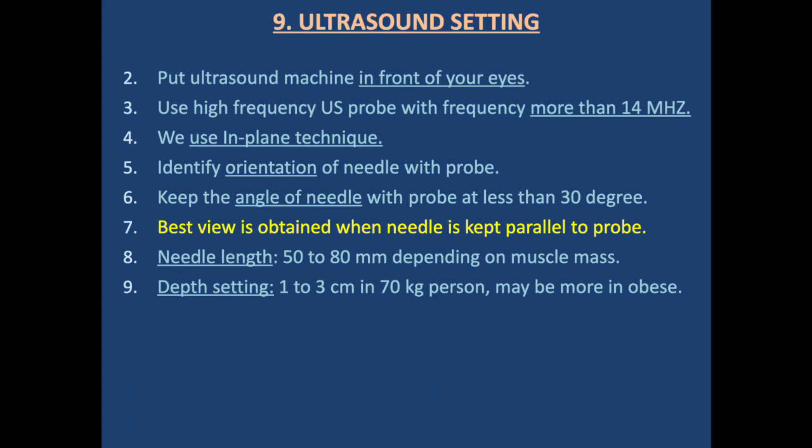For ultrasound settings, we place the ultrasound machine in front of our eyes and use a high-frequency linear probe. We use the in-plane technique, though the out-of-plane technique can also be used. We identify the orientation of the needle with the probe, keep the angle of the needle with the probe at less than 30 degrees — best view is obtained when the needle is parallel to the probe. Needle length is 50 to 80 mm depending on muscle mass. Depth setting is 1 to 3 cm in a 70 kg patient, and may be more in obese patients.